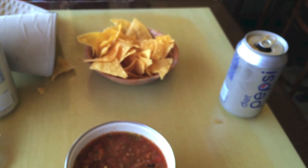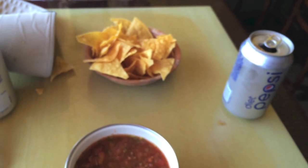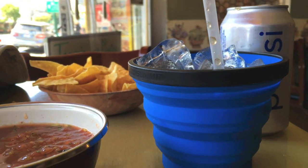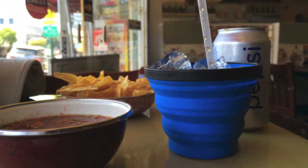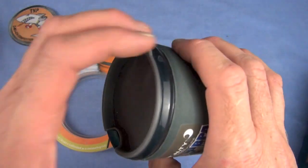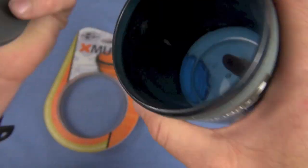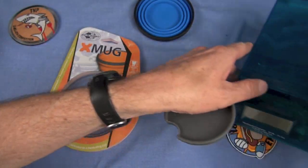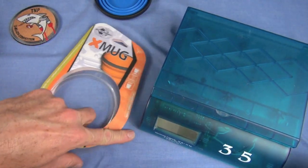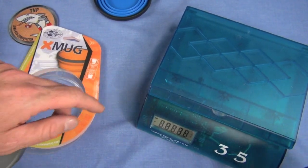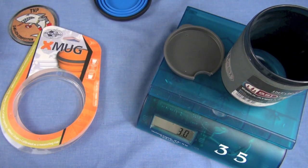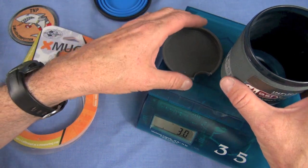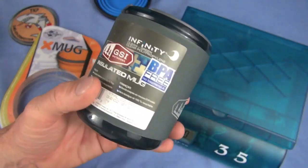First up, we talked about SAWC, right? Size and weight constraints. A lot of times we can't take this here. This is an Infinity, I guess that's the name of it, GSI Outdoors mug. It's insulated, it's good. I like it, has a lid on it, apparently tight-fitting too. It's really nice. Let's see how much this weighs. I don't know, three-ish? Oh, I did not weigh that before. Three ounces.